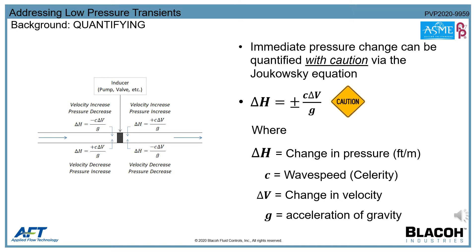Quantifying the extent of a transient pressure rise or fall begins first with the Joukowsky equation. Note: the greater the system's wave speed or the greater the change in velocity, the larger the surge impact will be. Also note, the direction of pressure change is relative to the direction of the initial flow to the inducer. For example, in the case of a pump start, the fluid velocity increases, causing a low pressure transient at the inlet of the pump and a high pressure transient at the outlet.